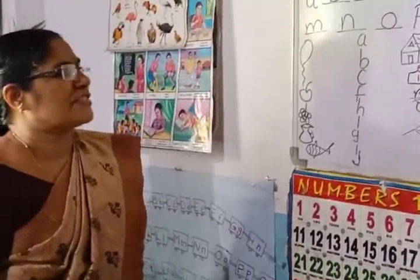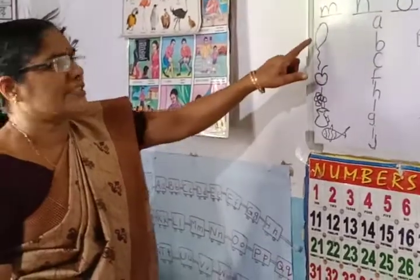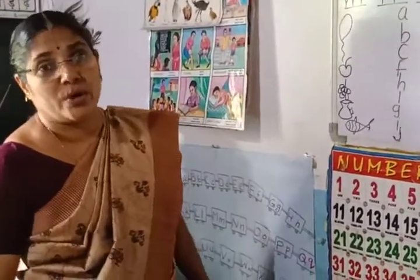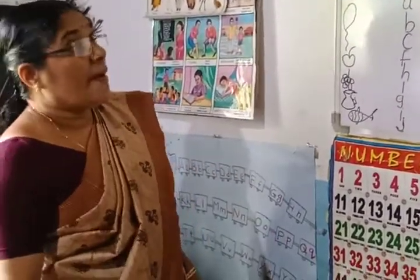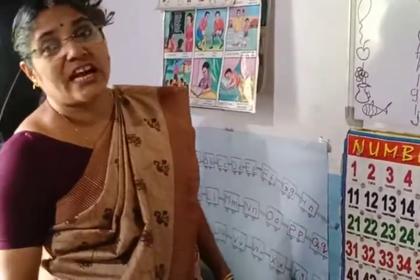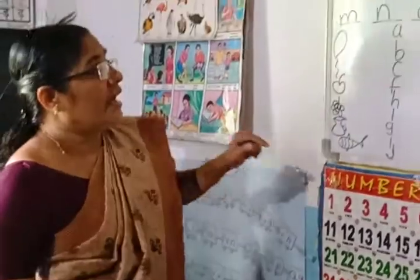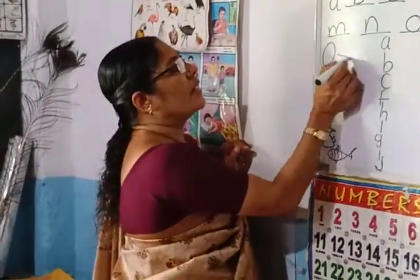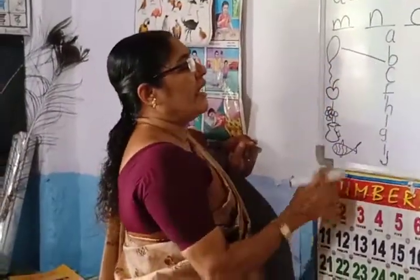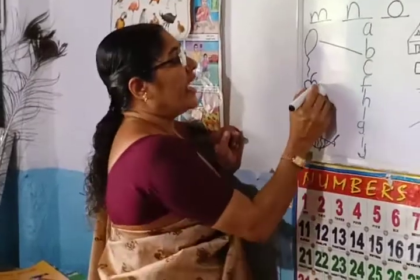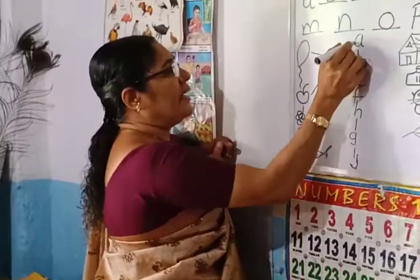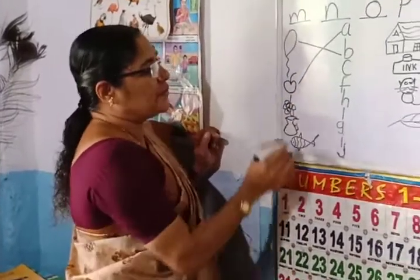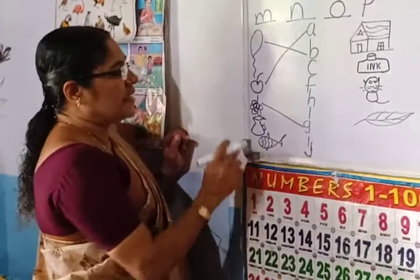And here, look — match the picture to the letter. What is this picture? This is the picture of a balloon. Which letter does balloon start with? B for balloon. And what is this? Apple. A for apple. And what is this? Grapes. G for grapes.